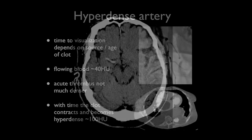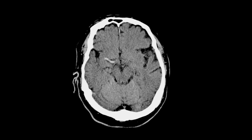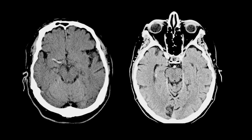In this case, we can see the right M1 segment of the middle cerebral artery is much denser than any of the other arteries visible. In this second case, thromboembolism has occurred to the top of the basilar artery, which is much more dense than the internal carotid arteries at the same level.